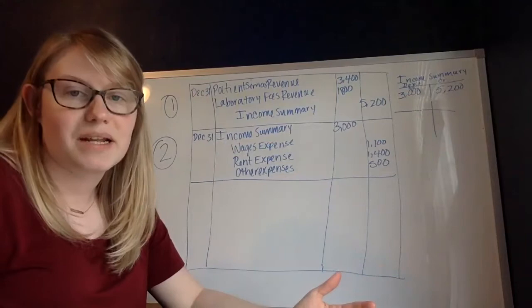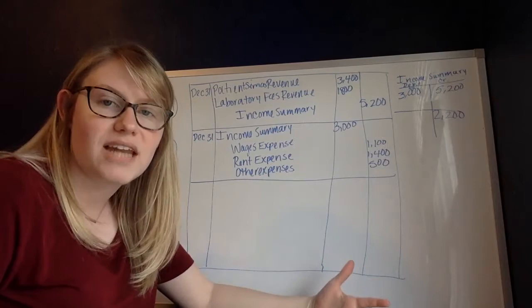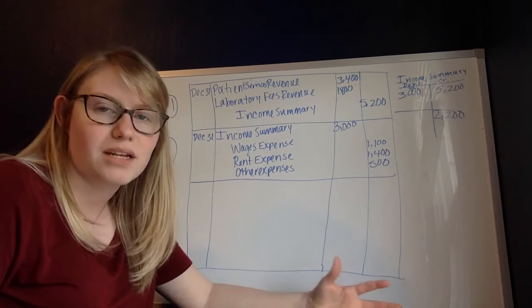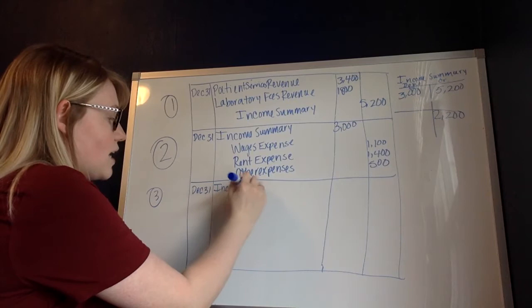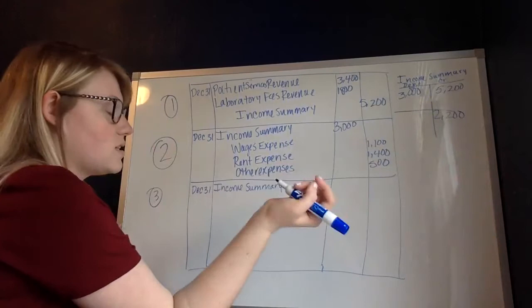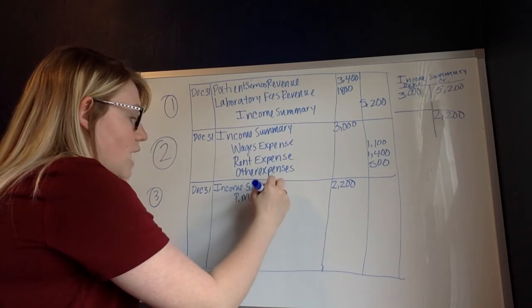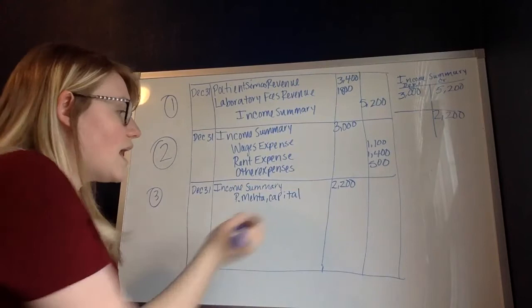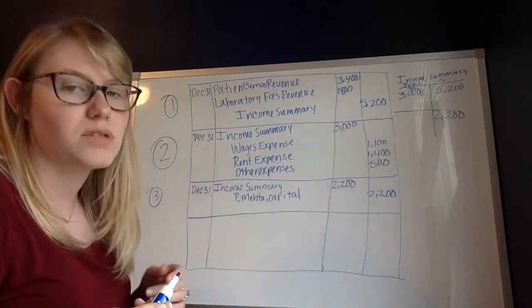I can see that my revenues definitely exceed my expenses, so I'm going to have a $2,200 credit balance in my income summary account. That means I have a net income for my business. When closing my income summary account I'm going to have to debit it to bring it back to zero — that is my third step. I'm debiting the income summary because right now I have a credit balance, so I need to do the opposite to close it. It's going to be a debit of $2,200, and then I'm going to credit P. Meta capital for $2,200. That increases the owner's capital account and zeros out the income summary.